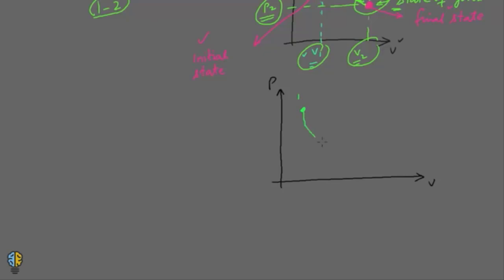Starting at state 1, let's go to state 2 — that is process 1-2. Then from state 2, let me come back again to state 1. What is happening is I am going from the initial state to the final state in one direction, and then from the final state I am going back to the initial state in the other direction. When in a process the initial state is equal to the final state, then we say that a cycle has just occurred.